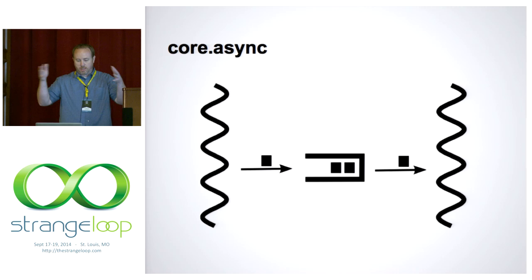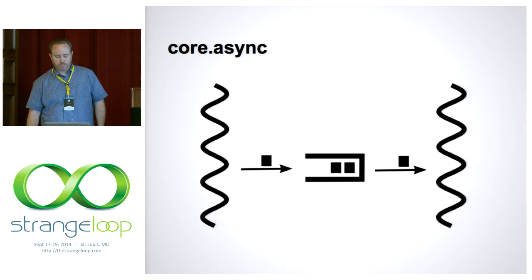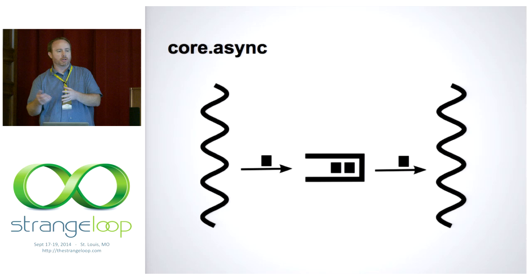Core async is fundamentally about the idea of creating concurrent threads that can communicate asynchronously via channels. It's all built to be concurrent, so you can have many threads all producing items going into a channel, and on the opposite side, many threads concurrently taking items out of channels.